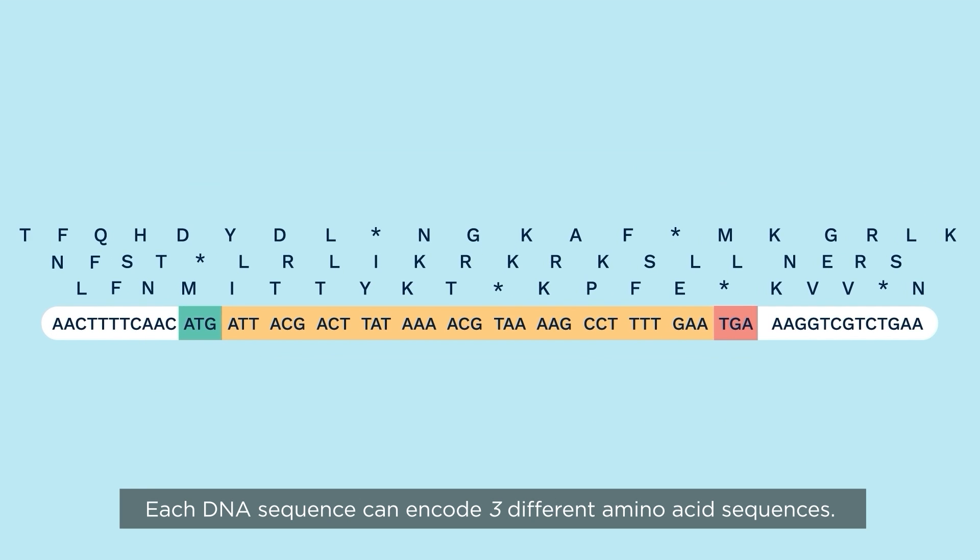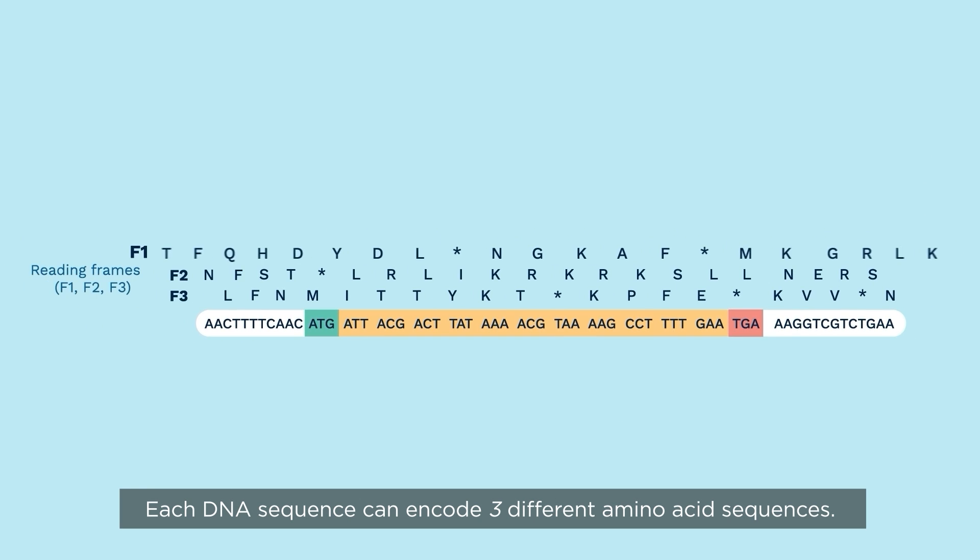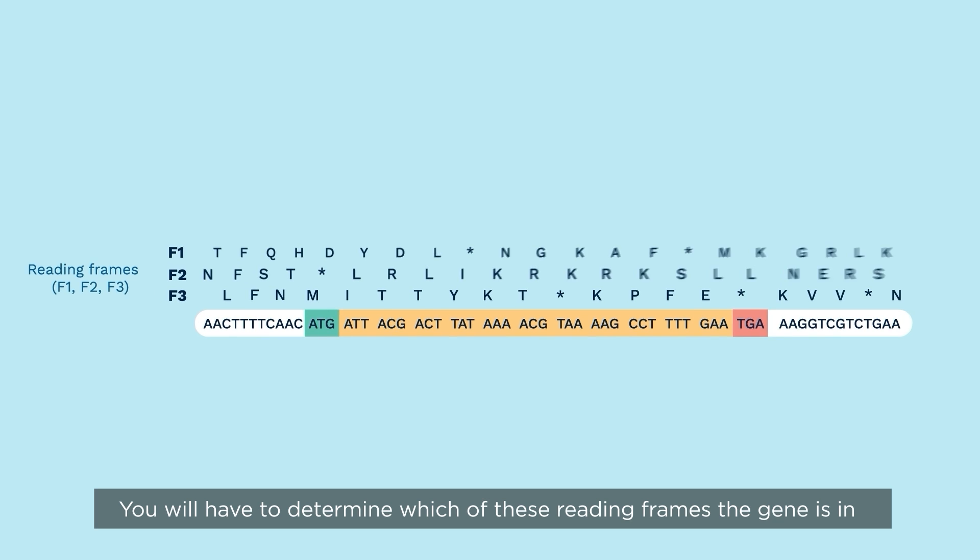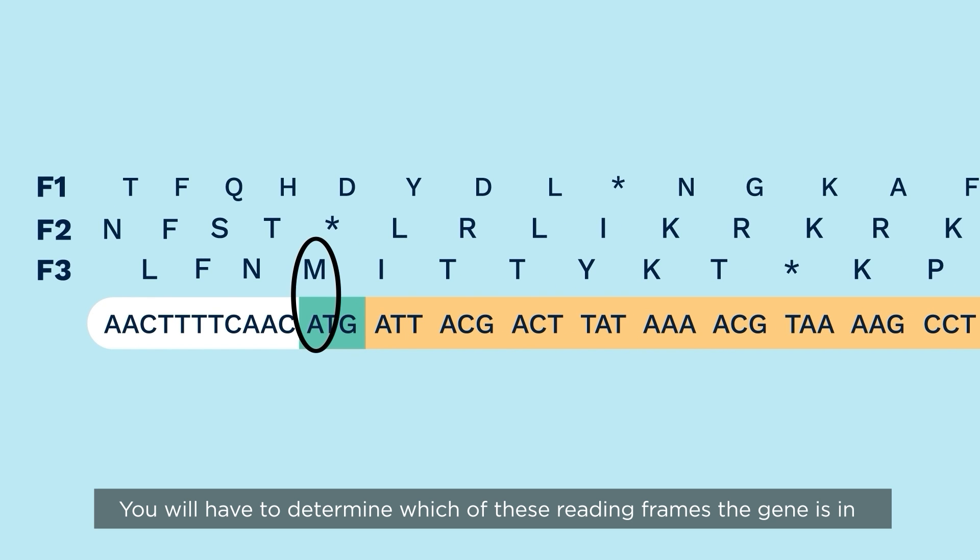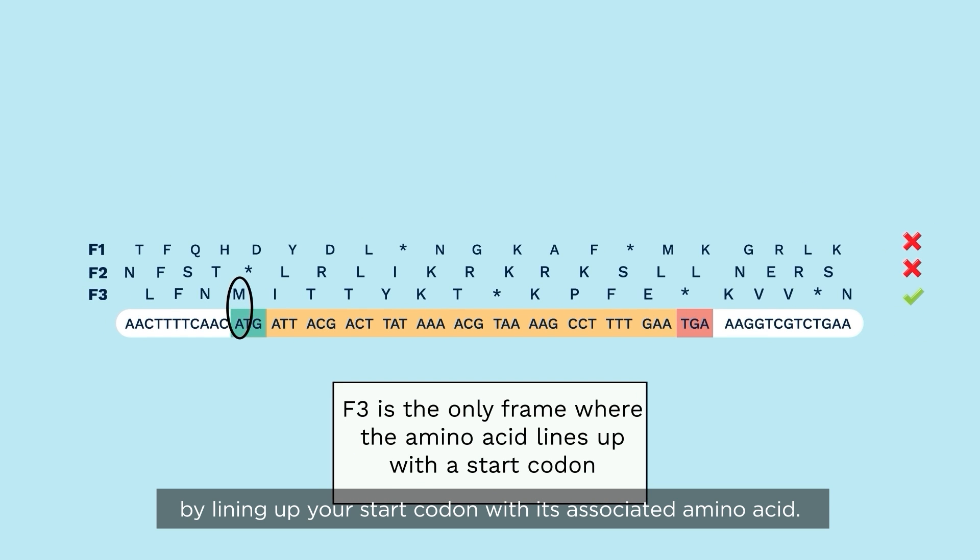Each DNA sequence can encode three different amino acid sequences. You'll have to determine which of these reading frames the gene is in by lining up your start codon with its associated amino acid.